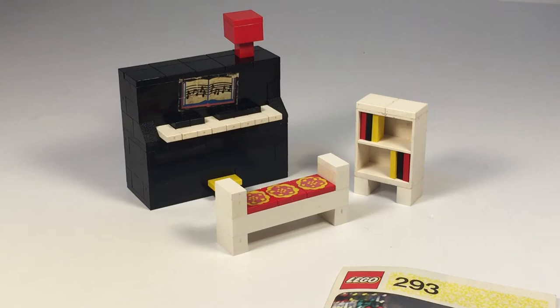You got a bookshelf and a bench and it is pretty much common pieces. So you could really make this today. Now some of the vintage pieces, they're not made in this style anymore, but basically it's all common pieces, which is pretty cool.